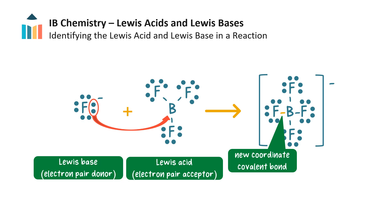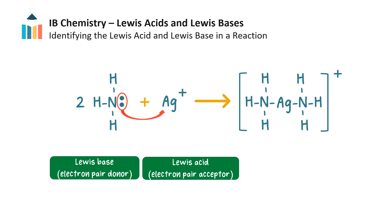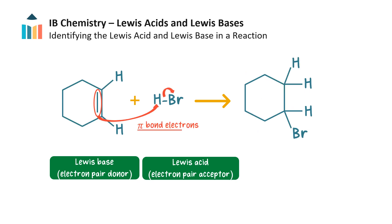This next example shows how a metal cation can act as a Lewis acid by accepting a lone pair from a Lewis base — in this case, ammonia. The reaction of metal cations with electron-rich species is discussed further in another video. Finally, in this example, we can see that a pair of electrons from a pi bond rather than a lone pair can be donated, making cyclohexene a Lewis base in this reaction.